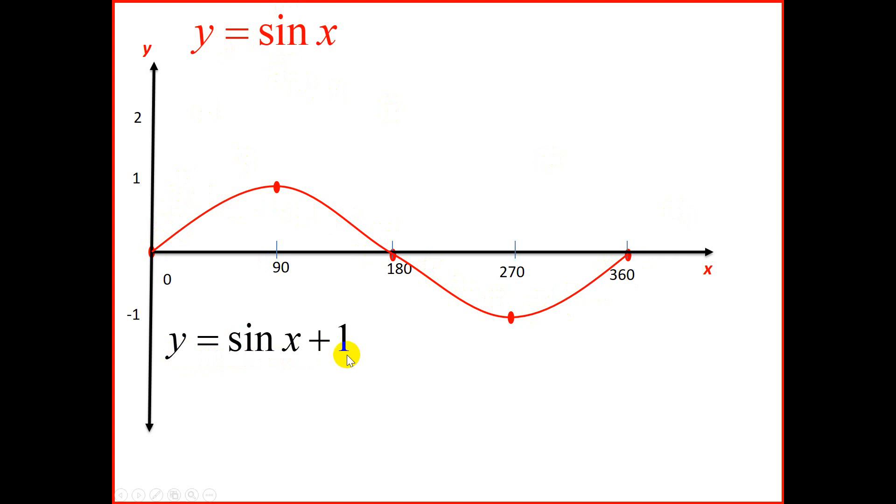So to start off, we're going to use our calculator. At 0, we're going to type sine 0 plus 1, and we should get 1. At 90, we're going to type sine 90 plus 1, and we should get 2.